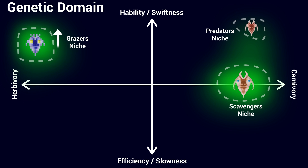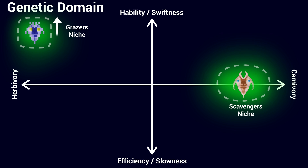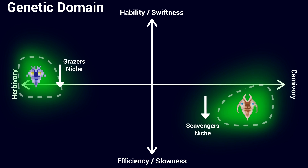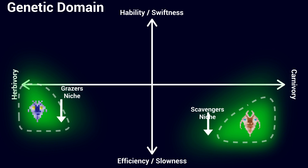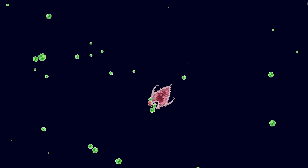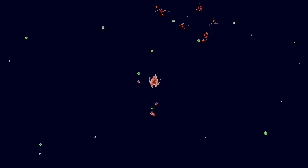The predator population eventually went extinct because they couldn't maintain a sufficient advantage over their prey. With the predators gone and the incentive towards speed and agility they brought with them disappearing, both remaining species went back to competing amongst themselves and optimizing for efficiency. I tried it again a few times, but always ended up with the same results. The conclusion was clear — herbivores were far too overpowered.